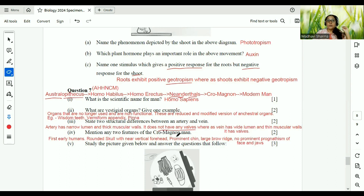Two features of Cro-Magnon. We were just talking about the Cro-Magnon. First, early humans, rounded skull with near vertical forehead. Prominent chin, large brow ridge. And yes, no prominent prognathism of face and jaws. That is, prognathism means the jaws, usually in the earlier ones, it was protruding. But not now. No more. And the Cro-Magnon one is, which I have not written here, as I just said, it has the foramen magnum, the hole for spinal cord to go.